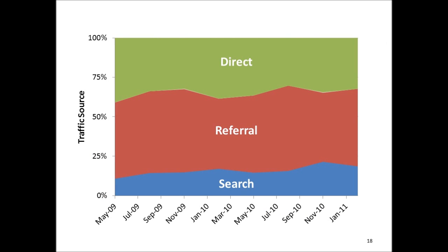Where are these visitors coming from? This data, collected from the past two years, shows the source of the traffic. Direct traffic indicates what people remember and type as the address for the website, or what they have bookmarked. Referral traffic means visitors who got to Boston Navigator through a link from another website. Finally, search traffic is visitors coming to Boston Navigator through a search engine such as Google.